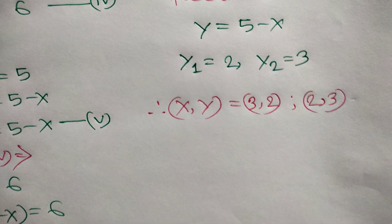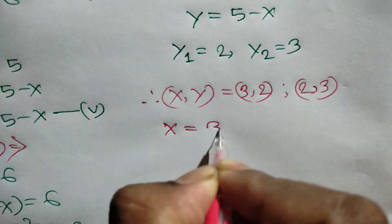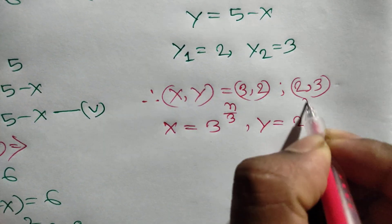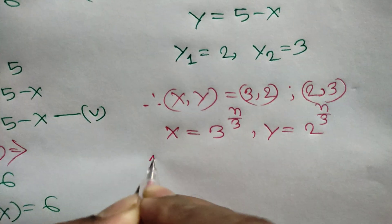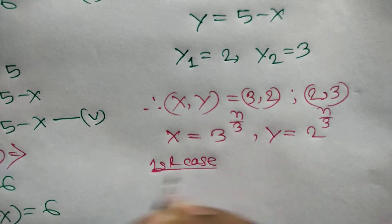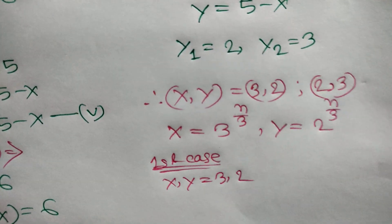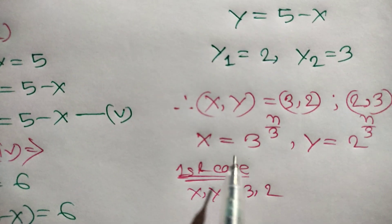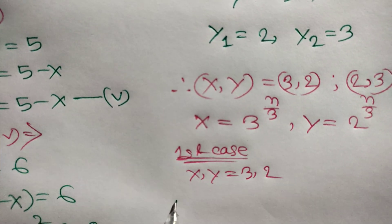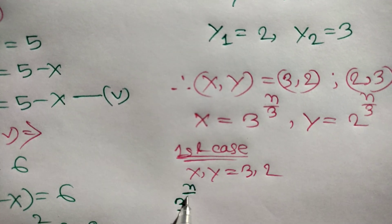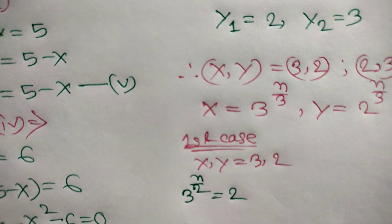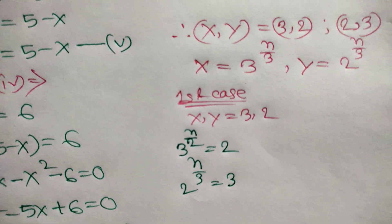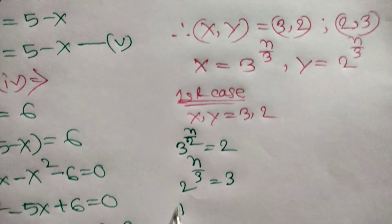Remember, x equals 3 to the power n over 3 and y equals 2 to the power n over 3. For the first case, when (x, y) equals (3, 2): 3 to the power n over 3 equals 2 and 2 to the power n over 3 equals 3. There are no integer solutions, so this case is rejected.